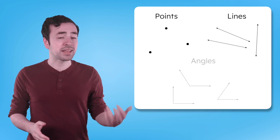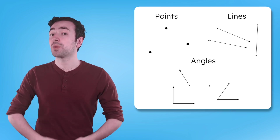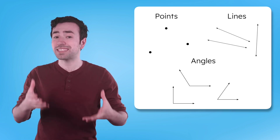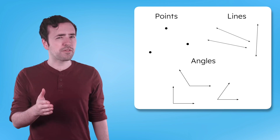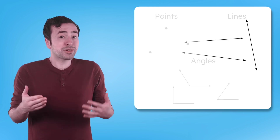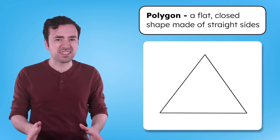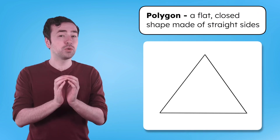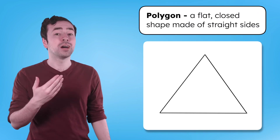In our previous few lessons, we explored points, lines, and angles. Now it's time to find out what happens when we connect several line segments and angles. They make shapes! Any shape that is flat, closed, and made of straight sides is called a polygon.